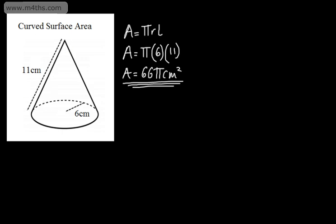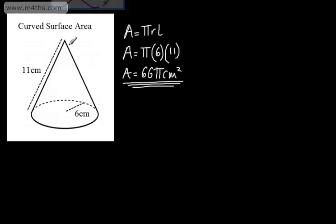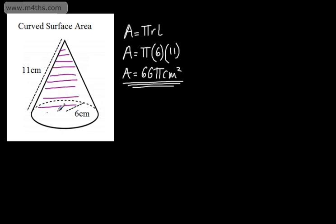What we've done is found the area of everything we can touch on the outside, all the way round, but not, in this particular case, the area of the circle. We will assume that this is a hollow cone.